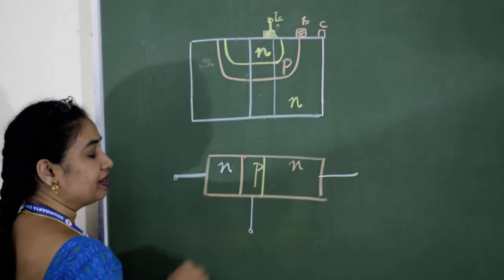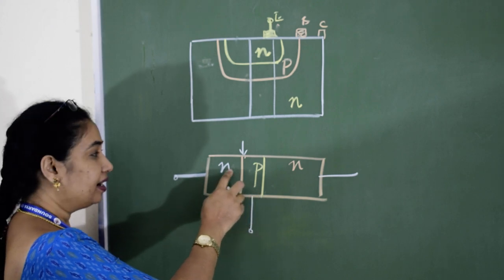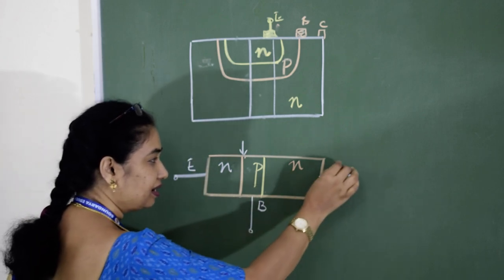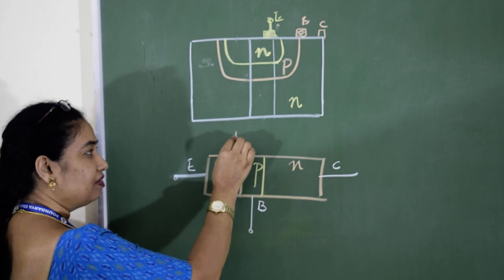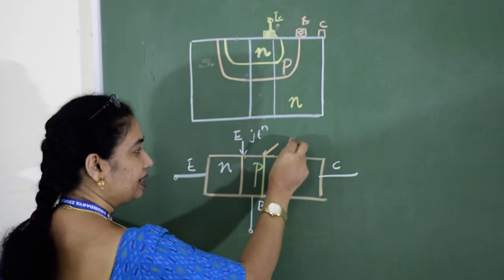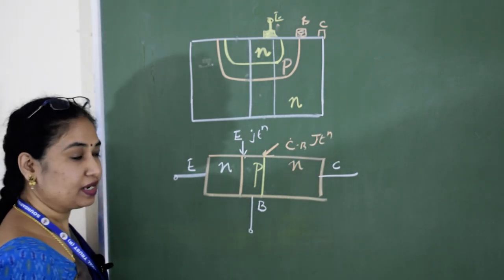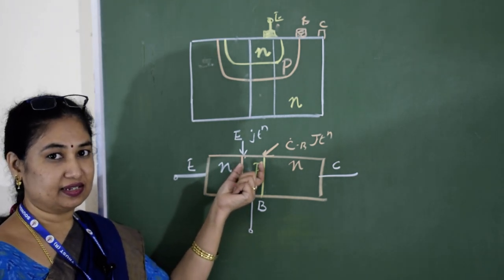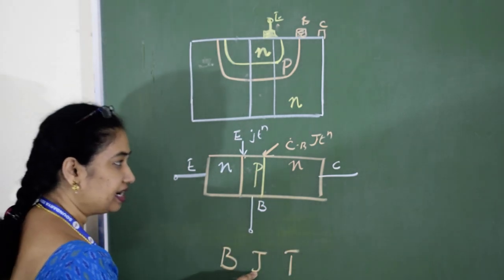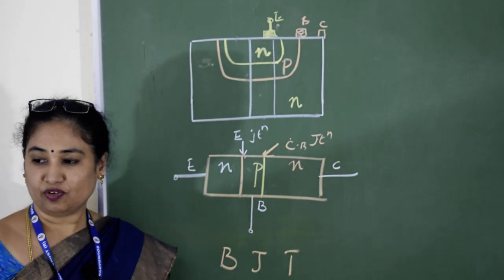The junction between emitter and base is the emitter junction, and the junction between collector and base is the collector junction. There are two junctions, therefore it is called a junction transistor. When we say bipolar junction transistor, 'junction' refers to the junctions between P and N type regions. Emitter is heavily doped, collector is moderately doped, and base is lightly doped.